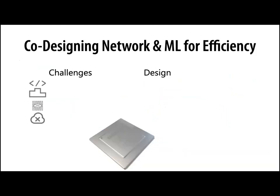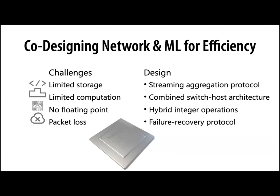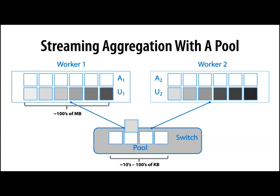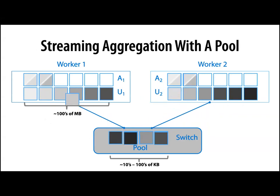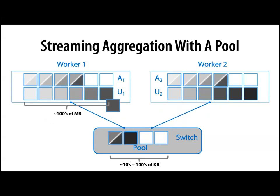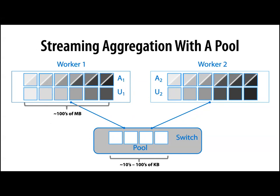As GPUs get faster, the computation time decreases and we push the training bottleneck to the network. We're asking whether in-network computation can help. Not surprisingly, it can. We leverage the fact that we don't need to exchange the entire model update from every worker — we just need to compute their sum. That's exactly the kind of computation a device in the middle of the network could perform effectively. There's a lot to do to make this work: because we can't fit the entire vector on the switch at once, we run a streaming protocol where each worker sends pieces to the switch, which waits for all workers, performs aggregation, sends the result, then moves to the next piece.